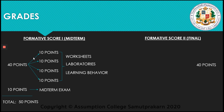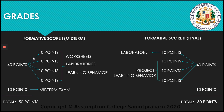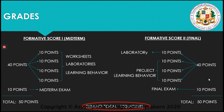Next, we have your Formative Score 2. These are your scores during the final period, just like in Formative 1, with a total of 50 points. But the 30 points here will be accumulated from your projects and your learning behavior. The remaining 10 points is your laboratory, and another 10 points for your final exam. Therefore, the total score during the first semester is 100 points. For you to pass, you need to earn at least 60% from the total score; otherwise, expect to get an R grade.